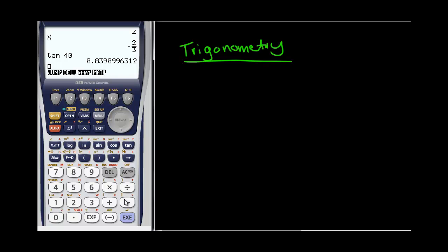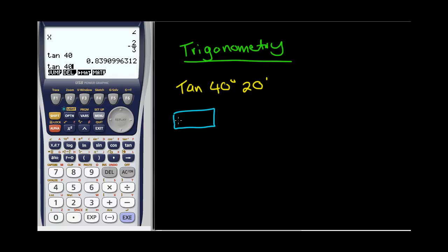Just one thing I'll mention to start with: if you need to write in something like 40 degrees and 10 minutes, that's a little bit trickier. So let's write in sin 10 degrees and 40 minutes — actually we'll say 20 minutes. The problem is you don't have one of those little bubble buttons — remember the little button that kind of looks like a whole pile of bubbles. There actually is one on the calculator, but we just have to locate it.